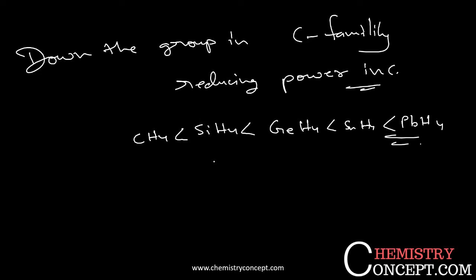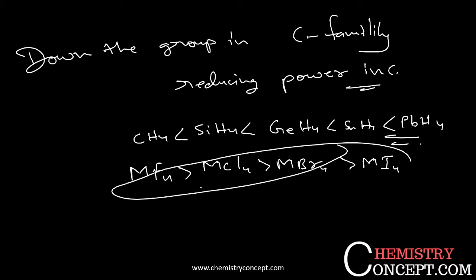The thermal stability and volatility of tetrahalides follows the order: MF4, MCl4, MBr4, and MI4, where M is the central atom from the carbon family.